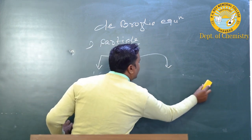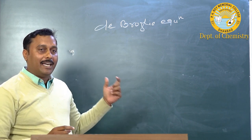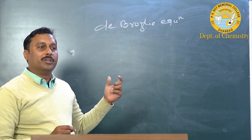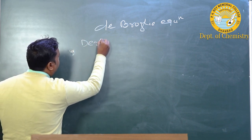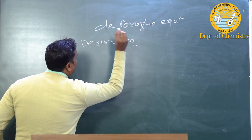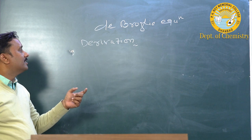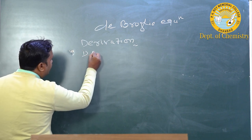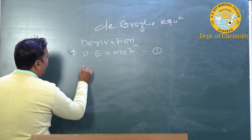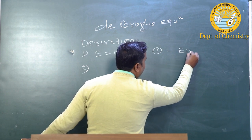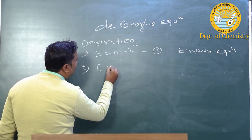Now we will try to derive the equations that de Broglie gave in 1924, that is, the de Broglie equations. He used two equations: the first is Einstein's equation (E = mc²) and the second is Planck's theory equation (E = hν).